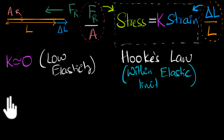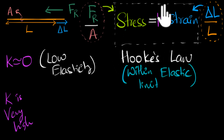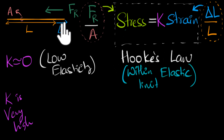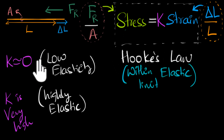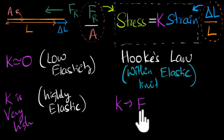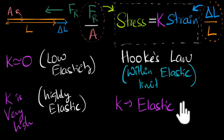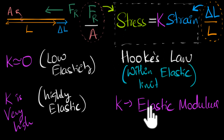What if K is very high? If K is very high, then even for a small amount of strain, the stress would be very high. Which means if you strain this material even a little bit, it will snap back very quickly to its original shape — it is very highly elastic. So high value of K means highly elastic. K is actually telling us how elastic a material is, and it's for that reason K is called the modulus of elasticity, or elastic modulus. It just tells us how elastic a material is — higher the value of K, more elastic the material.